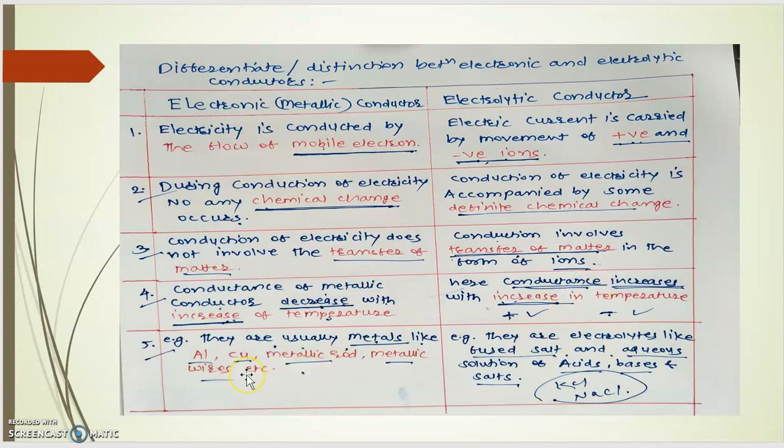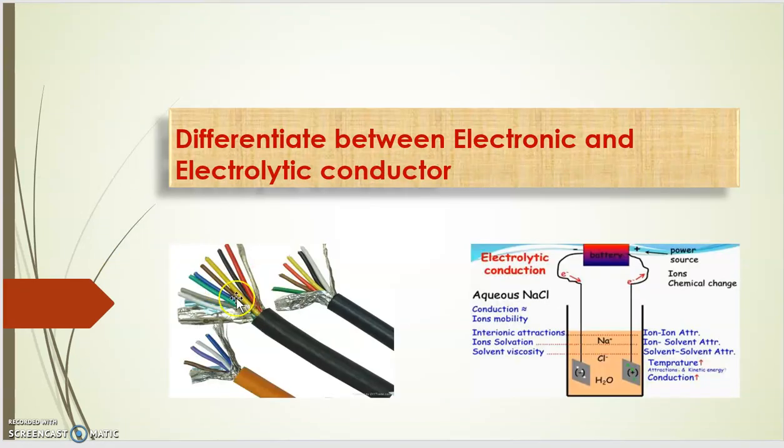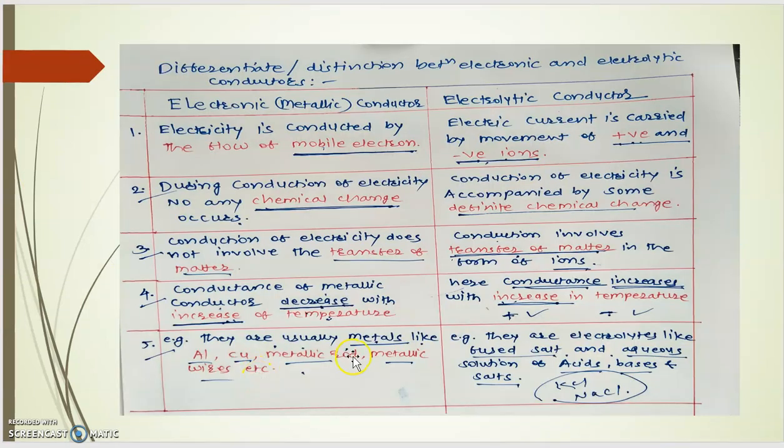Now the last point is of examples. They are usually metals that is metallic conductor. So these are usually metals like aluminium, copper, metallic rods or metallic wires. Just as shown in first slide if you see here there are number of wires that may be of copper aluminium wires are inserted here that is the metallic conductor. So that is the best example of metallic conductors.